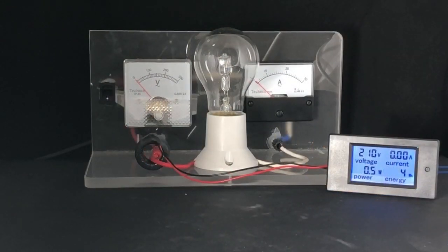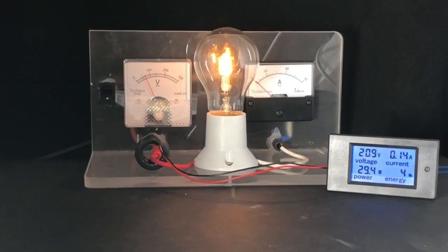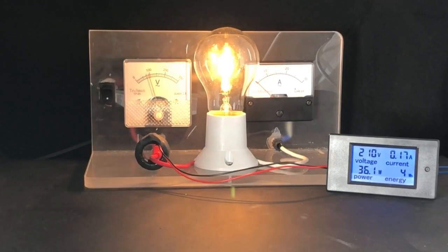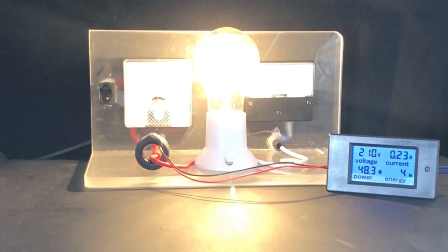De este modo, existen medidores llamados medidores eléctricos que utilizan bobinas toroidales para obtener el registro del consumo en un momento dado, como este medidor digital que proporciona el voltaje, los amperes, los watts y los watts por hora que consumen uno o varios aparatos conectados a la red.